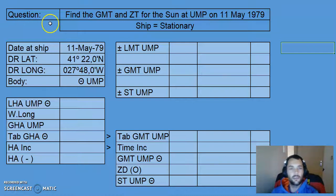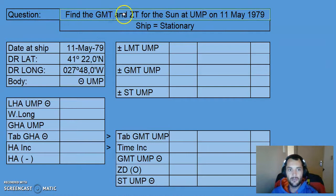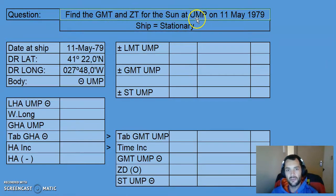Hello guys, welcome to this first video on Upper Meridian Passages for the Sun. In this question, we'll be finding the GMT and also the zone time for the Sun at Upper Meridian Passage on the 11th of May 1979.